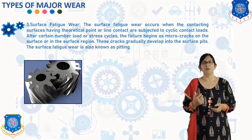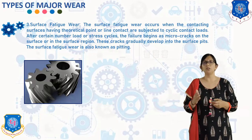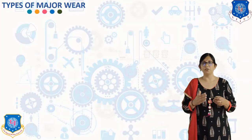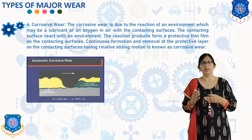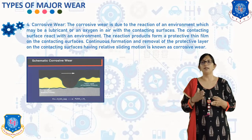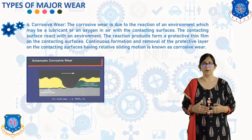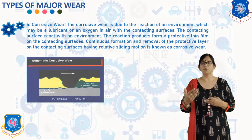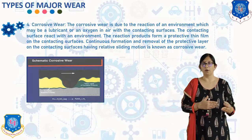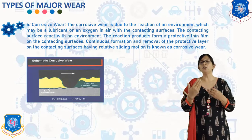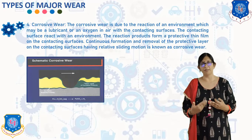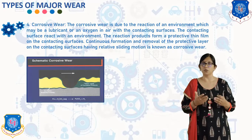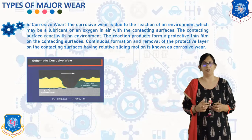The fourth type of major wear is corrosive wear. Corrosive wear is due to the reaction of an environment — which may be a lubricant or oxygen in air — with the contacting surfaces. The reaction products form a protective thin film on the contacting surfaces. The continuous formation and removal of this protective layer on contacting surfaces having relative sliding motion is known as corrosive wear.